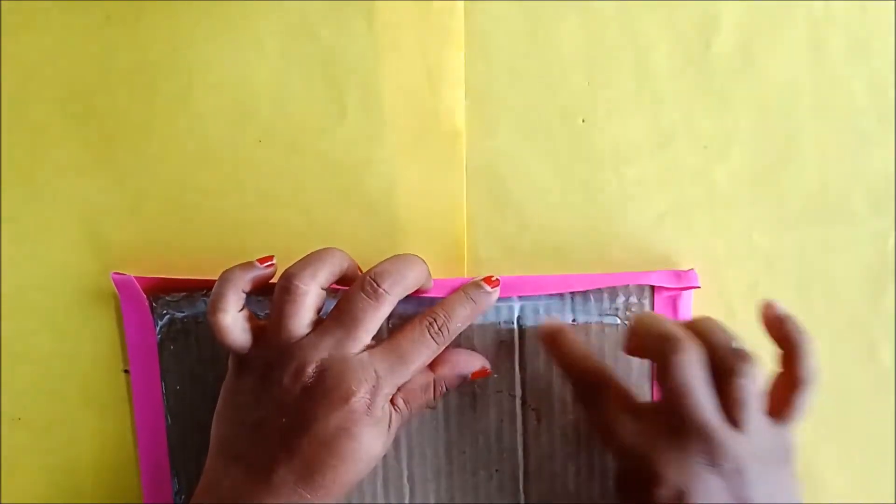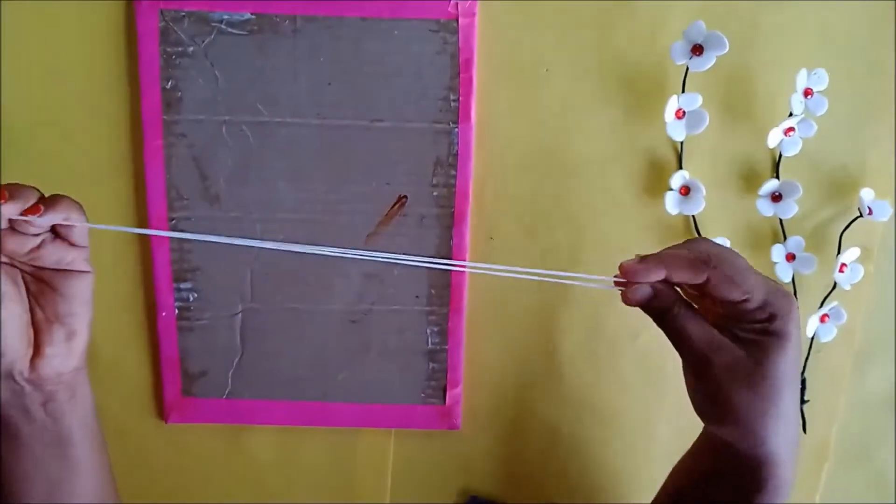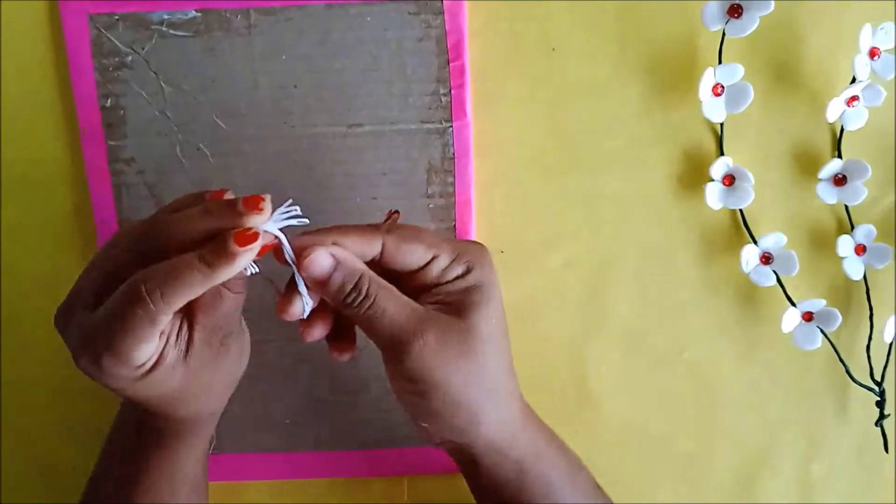Stick the thread with the glue gun on the back side as I am showing you to make the hanger.